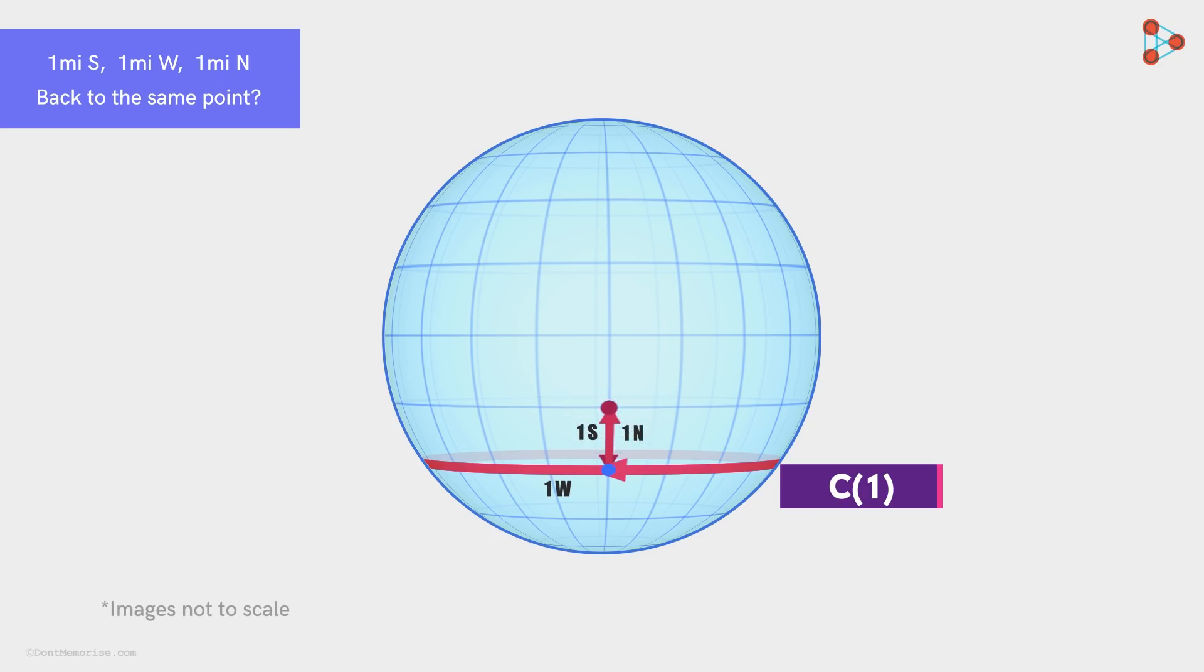So this circle helped us to find another solution to the puzzle. This point here is another solution. Did this help us find just one more solution? Surprisingly, it helped us find infinite more solutions. If we look carefully, every point on this shaded circle will be a solution to the puzzle.